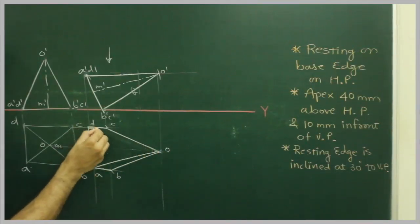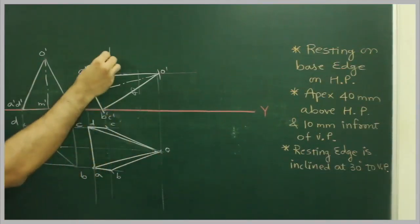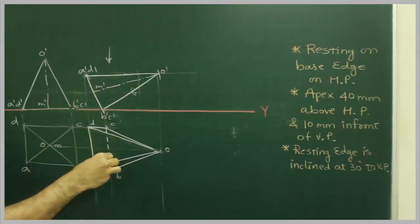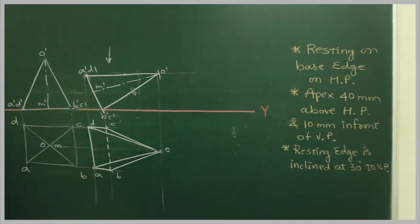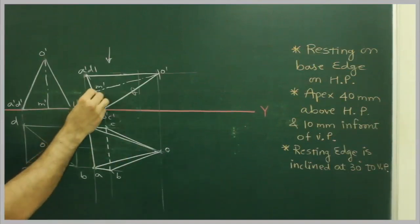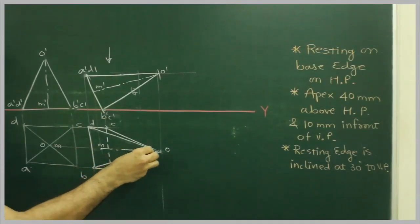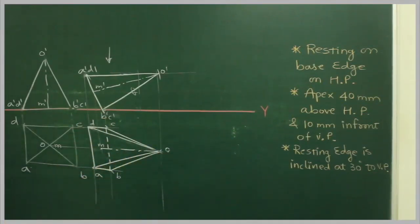O A and O D will be down, and B C is away from the observer. We will draw X's line as well.